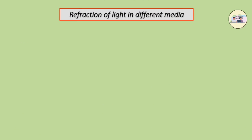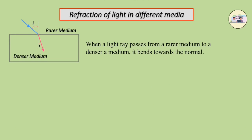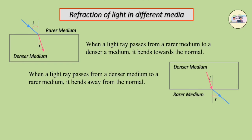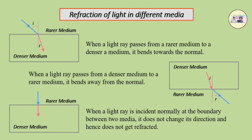Refraction of light in different media. When a light ray passes from a rarer medium to a denser medium, it bends towards the normal. When a light ray passes from a denser medium to a rarer medium, it bends away from the normal. When a light ray is incident normally at the boundary between two media, it does not change its direction and hence it is not refracted.